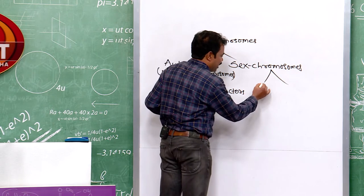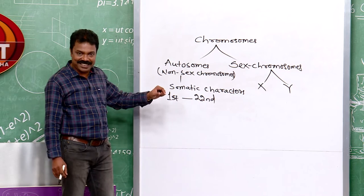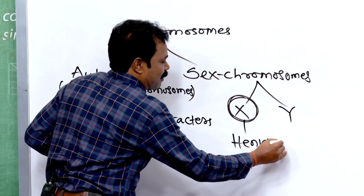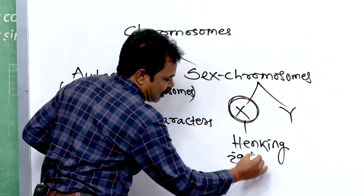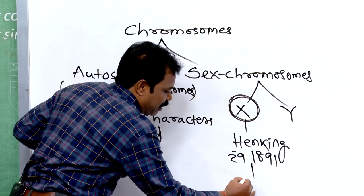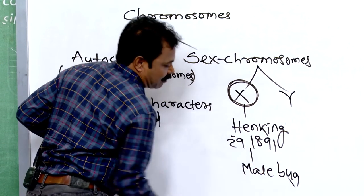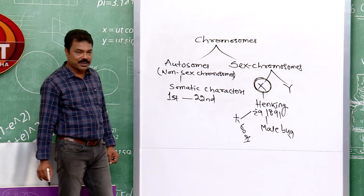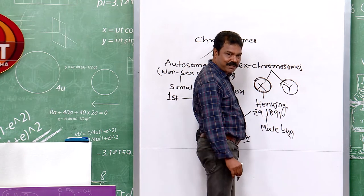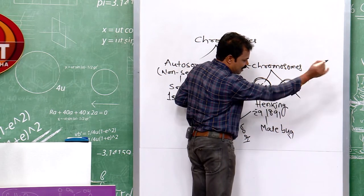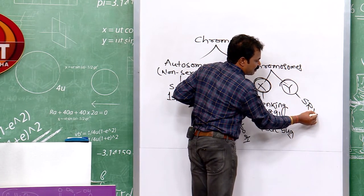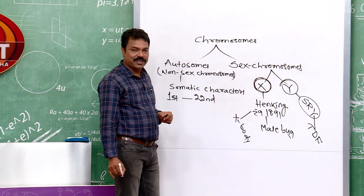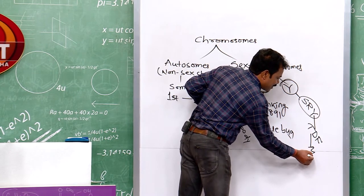Sex chromosomes are of two types: the X chromosome and the Y chromosome. The X chromosome was discovered by Henking in 1891, and he called it the X body. The Y chromosome is the smallest chromosome of our body with the least number of genes. It carries the gene SRY, which encodes a protein called TDF — testis determining factor — responsible for development of male sex.